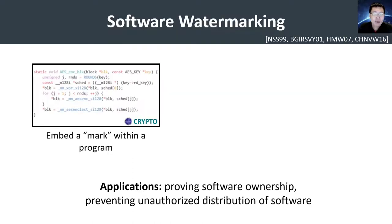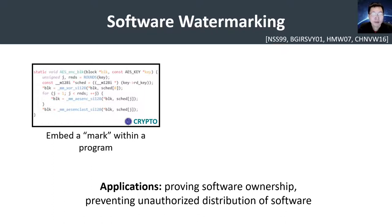Software watermarking has been proposed as a mechanism for proving software ownership and protecting against the unauthorized distribution of software. Typically, in a watermarking scheme, a user can embed a tag or a mark within a program so that the resulting marked version of the program is functionally equivalent to the original program. The mark could be a username, a serial number, or some other kind of identifier.